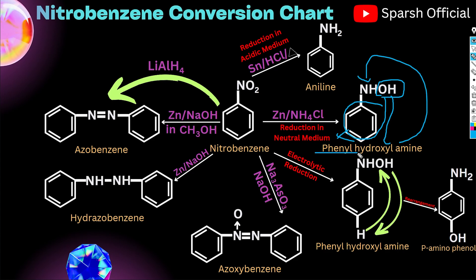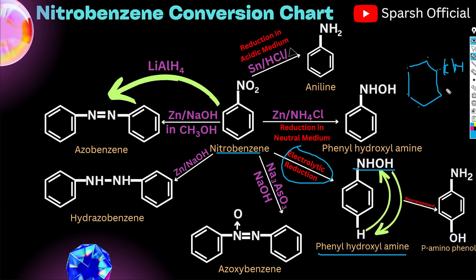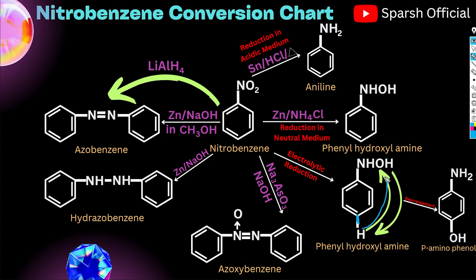The product is aniline — phenyl hydroxylamine. Further moving on: nitrobenzene has electrolytic reduction where an intermediate product is formed. Phenyl hydroxylamine is the intermediate product formed in electrolytic reduction, and aniline is the basic final product. There is a fun fact — aniline has a low carbon to hydrogen ratio.